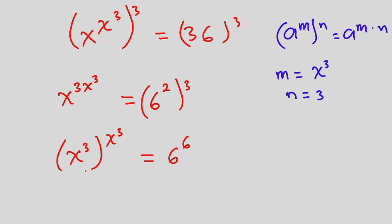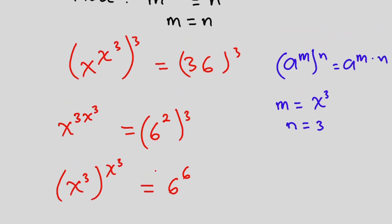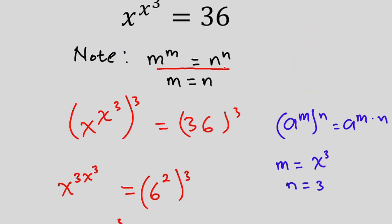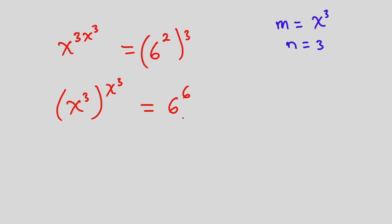And you see that this equation is of the form m to the power m equals n to the power n. And if this happens, we can say that m equals n. Therefore, we can say that x to the third power here is equal to 6.